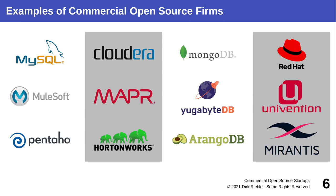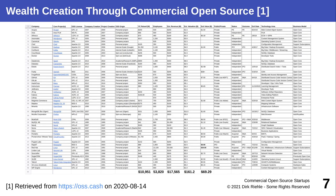Here are some examples of companies you would call commercial open source firms: the original MySQL database now owned by Oracle, open source distributors like Red Hat and SUSE, some less well-known or now defunct or acquired ones like Pentaho or MuleSoft, and some upstarts like ArangoDB and YugaByteDB. These commercial open source firms are doing pretty well. Many of them are unicorns, and in this table by OSS Cash you can see the exit and wealth creation for shareholders of these companies.